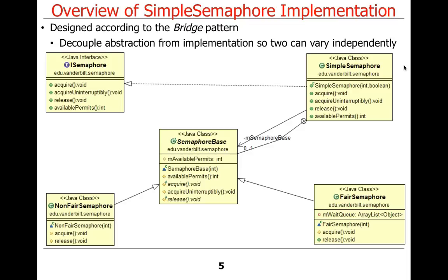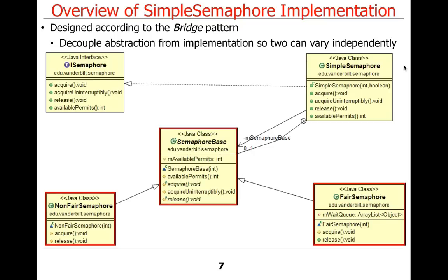This is not what you get out of the box with Java or Android — we went one step further. We have an interface called ISemaphore, which defines the interface methods, and then we implement SimpleSemaphore from that. You could also implement BinarySemaphore or some other kind of semaphore if you wanted. We're going to have a single abstraction implementation with several implementation variants. Here's the class that implements this interface, and here is the implementer hierarchy using the Gang of Four bridge pattern. We have a base class, and then NonFairSemaphore and FairSemaphore subclass it. All the methods in the abstraction simply forward to the semaphore base, which calls either NonFairSemaphore or FairSemaphore using the bridge pattern.